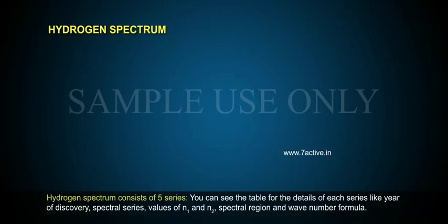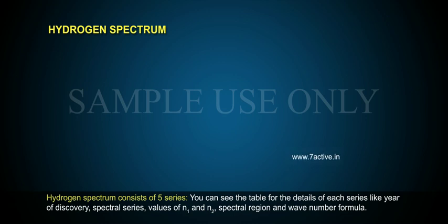Hydrogen spectrum consists of 5 series. You can see the table for the details of each series, including Year of Discovery, Spectral Series, Values of N1 and N2, Spectral Region, and Wavenumber Formula.